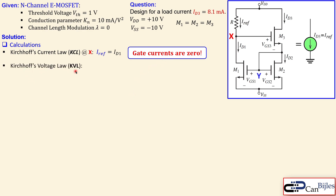Applying Kirchhoff's voltage law (KVL) from top to bottom: VDD equals the voltage across resistor R (by Ohm's law) plus VGS3, then from that node plus VGS1, plus VSS — that completes the full loop.